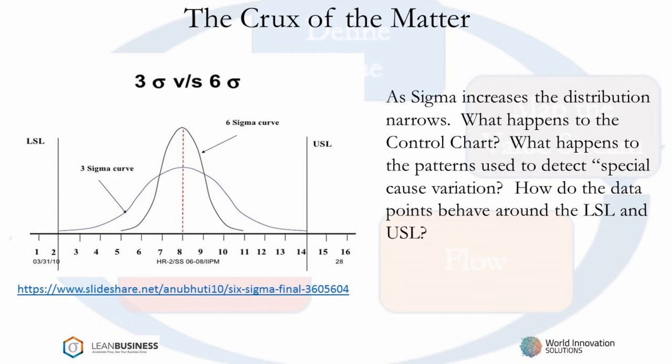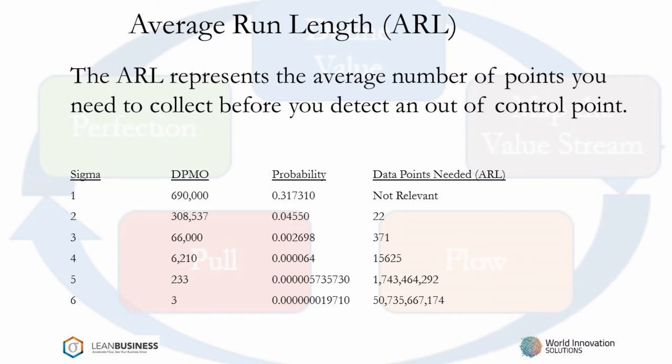Let's look at another example that demonstrates the failure of control charts. The average run length (ARL) is a methodology to determine the number of points needed to detect an out-of-control point. The ARL looks at defect distribution as being equally spaced. Also, ARL underestimates, because the pre-mentioned run tests — WECO and Lloyd-Nelson rules — are based on a sequence of points. The ARL does not predict the number of points needed to detect one of these tests.